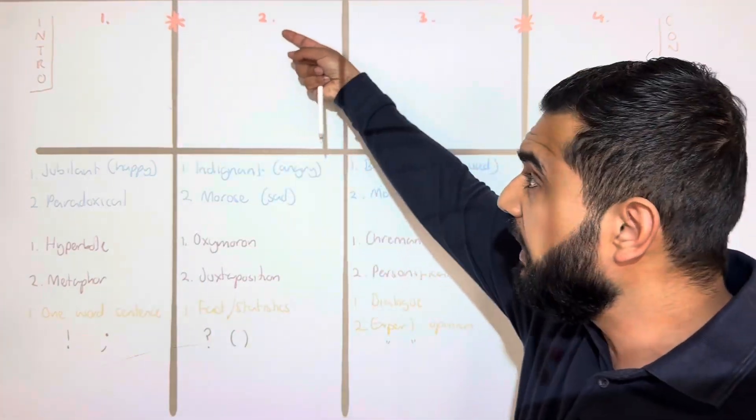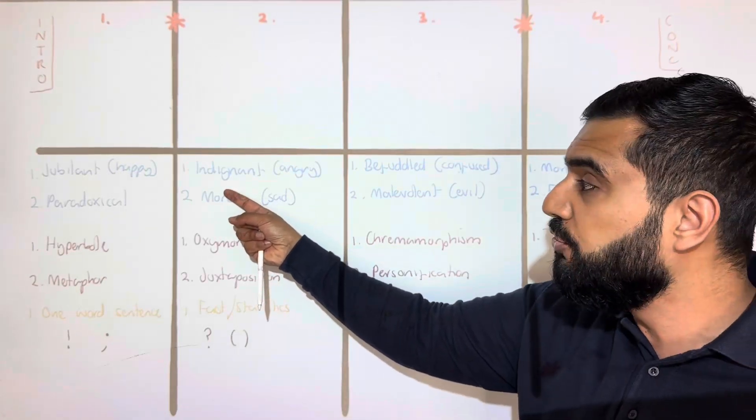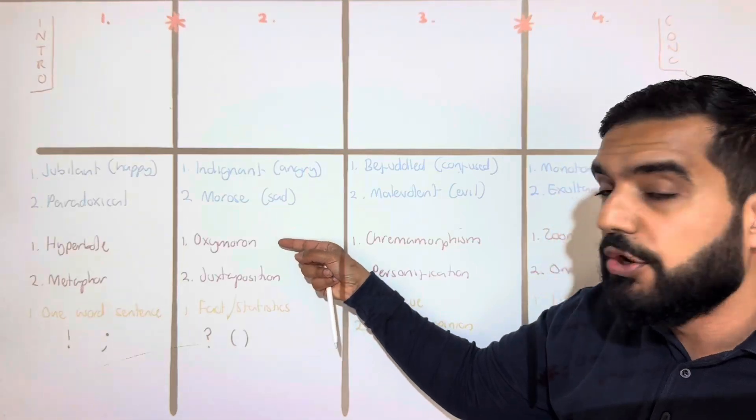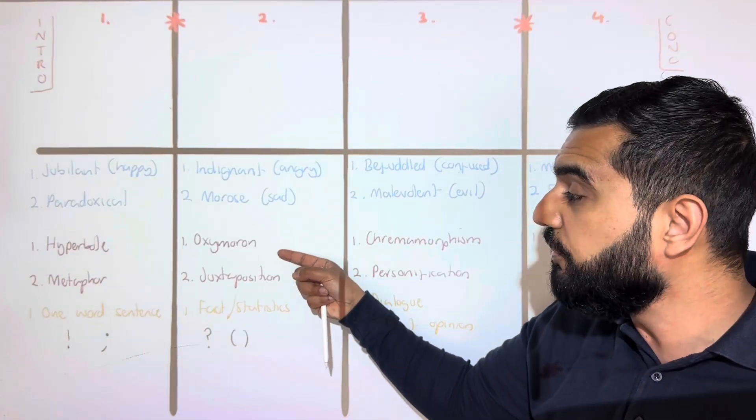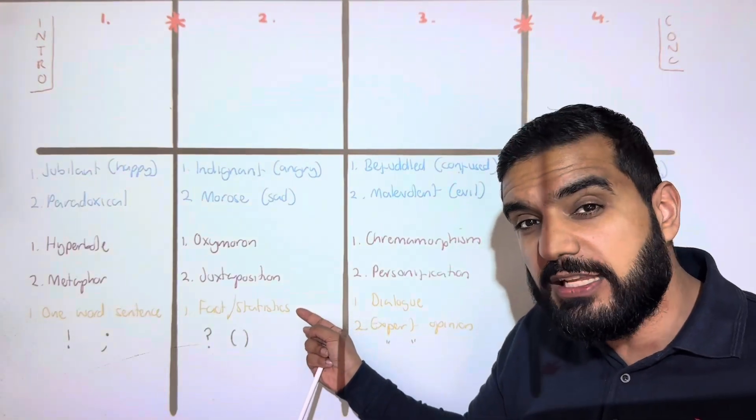Then we do a one-line paragraph. Then we do main paragraph number two. For your vocabulary, do indignant for angry and morose for sad. For language devices, do oxymoron and juxtaposition, then have some facts and statistics for structure, then have a question mark and brackets for punctuation.